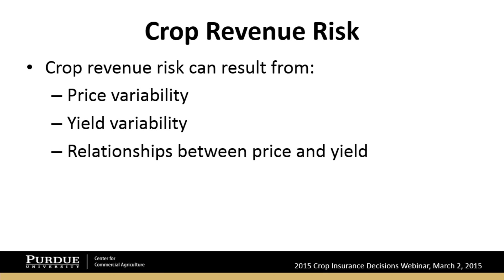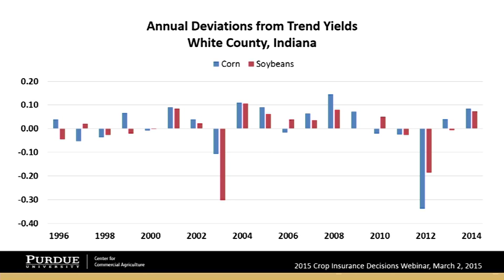Crop revenue risk really results from price variability and yield variability. An important improvement in crop insurance over the last 15 or 20 years has been the movement to revenue-based products to insure something that we, as producers, are more interested in — our annual crop revenue — not just yield, which is where crop insurance started out.